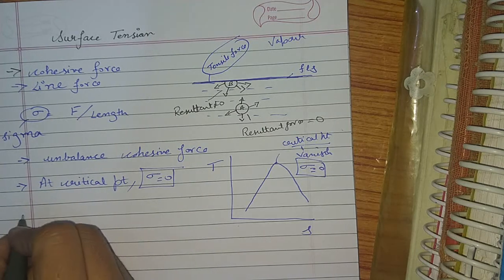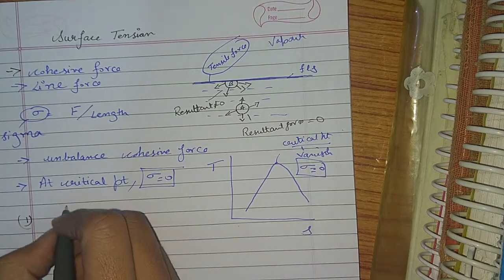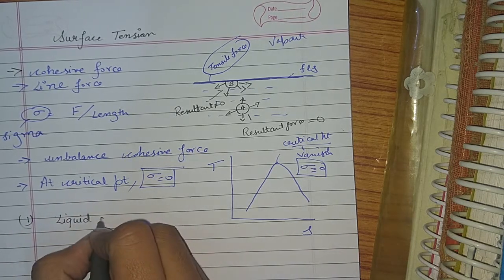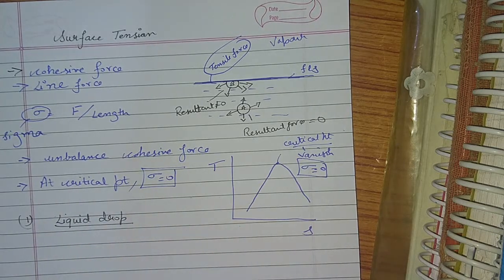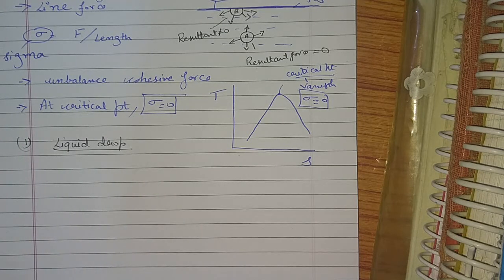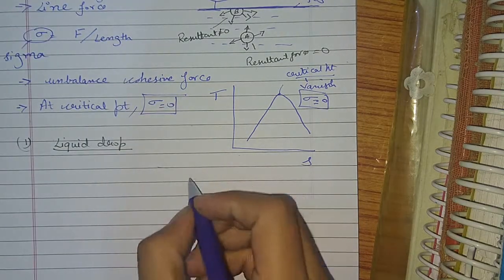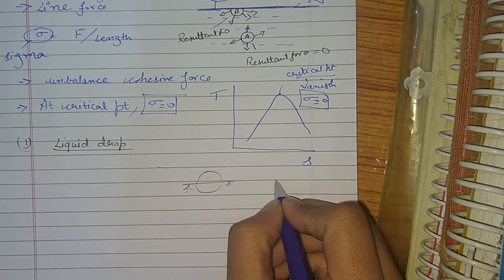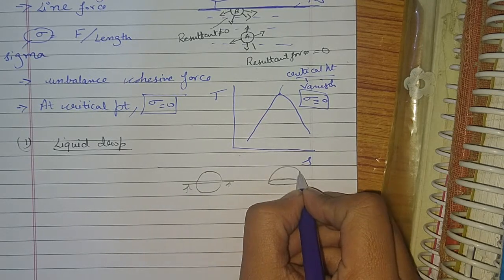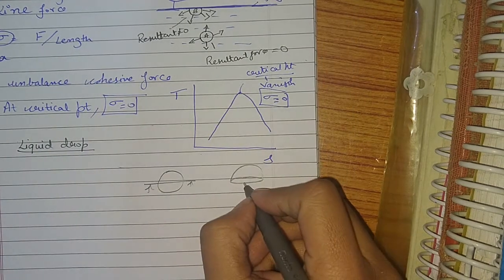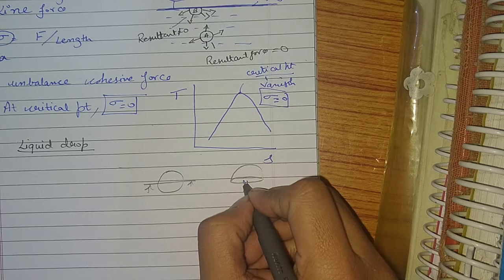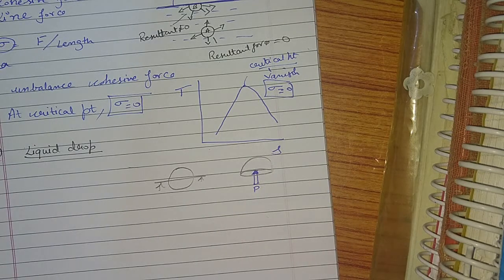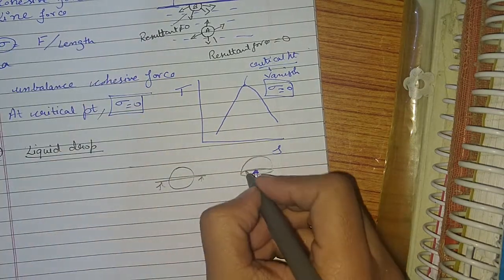Now three important cases. The first one is pressure inside a liquid drop. We have to find the excess pressure inside a liquid drop. Suppose this is a liquid drop. Now the cross-section area — the net pressure will be P, and since surface tension is a line force, it will act around the circumference.